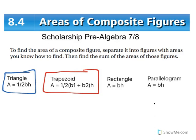A trapezoid is a quadrilateral with exactly one pair of parallel sides. Those parallel sides are never equal. We add the two parallel sides together, multiply by one-half, then multiply by the height. So the formula is: one-half times (base one plus base two) times height. Next, the area of a rectangle — which is the same as a square — is just base times height.